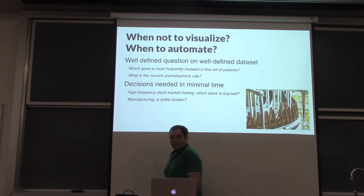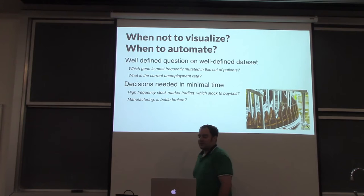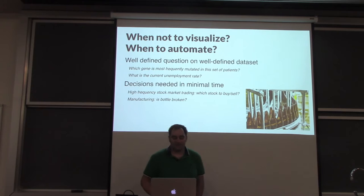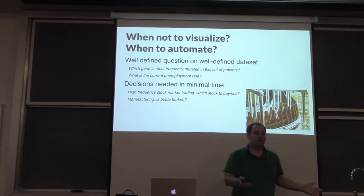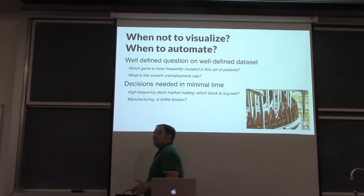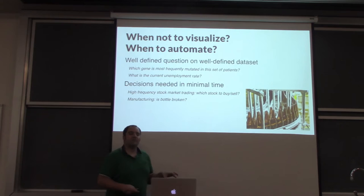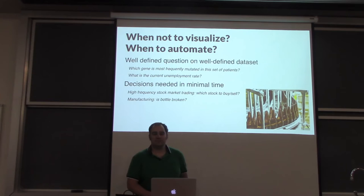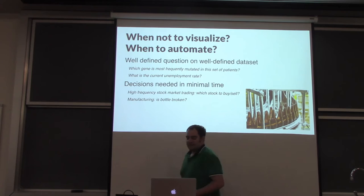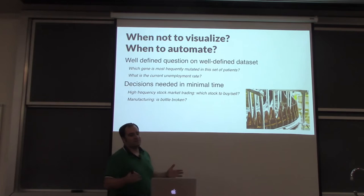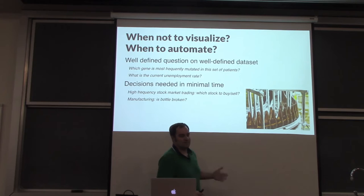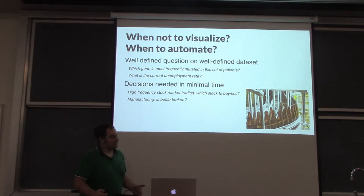There are good reasons not to visualize. For example, if you have a well-defined question on a well-defined dataset: which gene is most frequently mutated in this set of patients? Run an algorithm, get the answer. Or: what is the current unemployment rate — if you only care about the number right now, you don't need visualization. Visualization implies human factors — a person involved. High-speed decisions like high-frequency stock trading, or automated quality checks like whether a bottle is broken, are better left to automated processes.